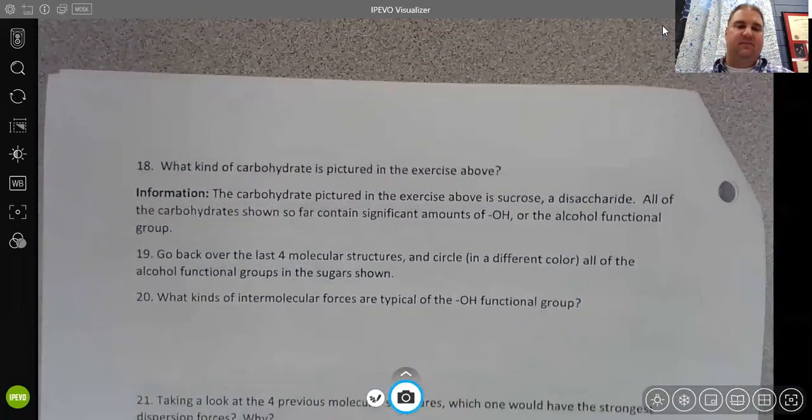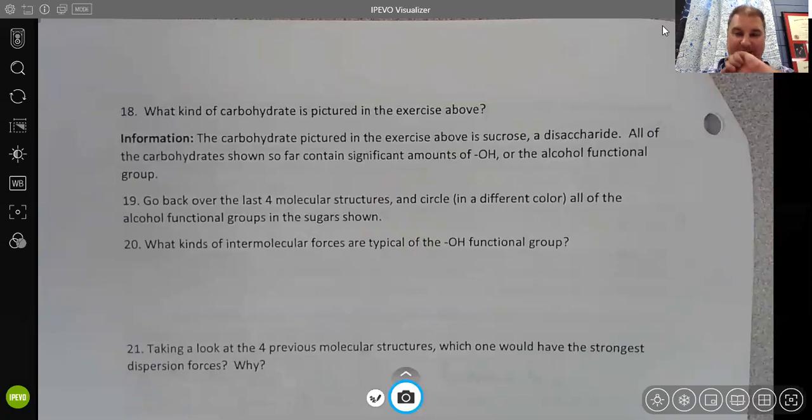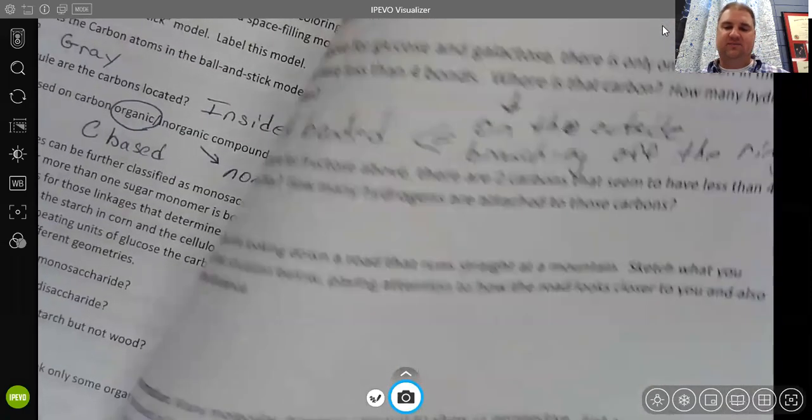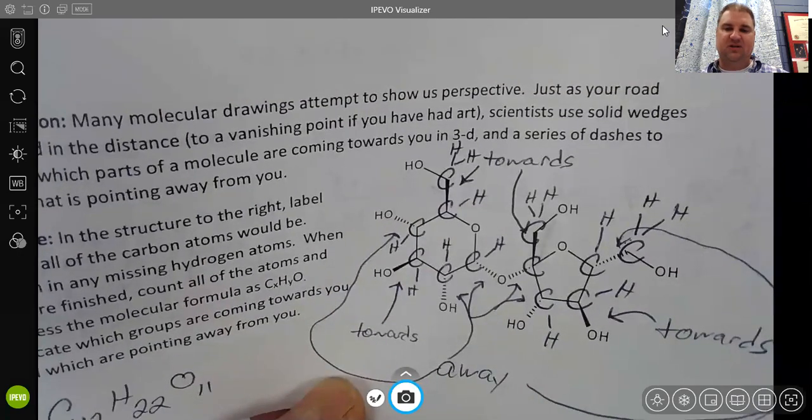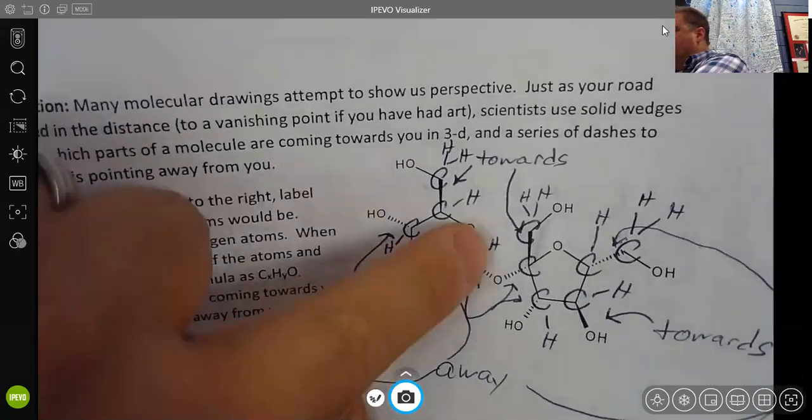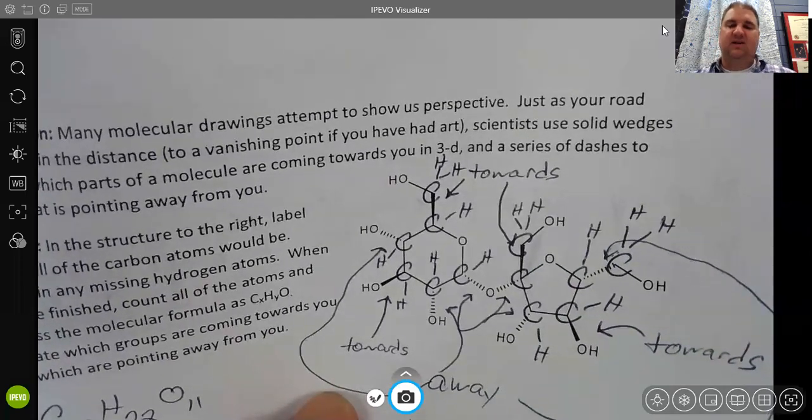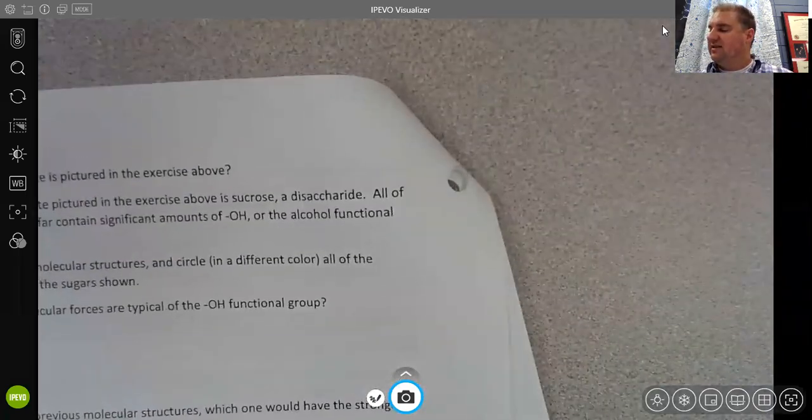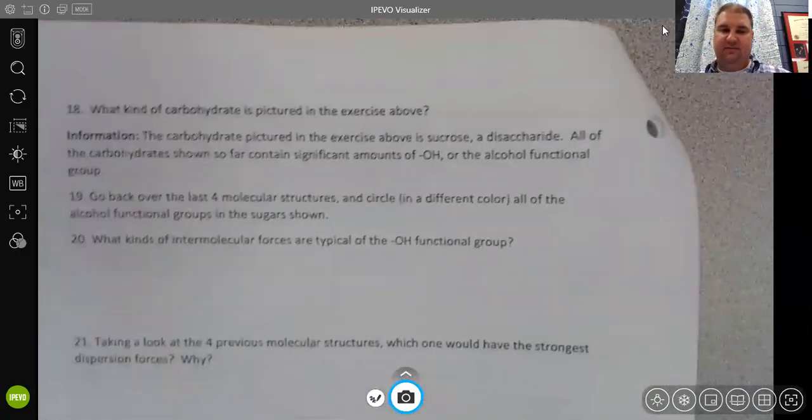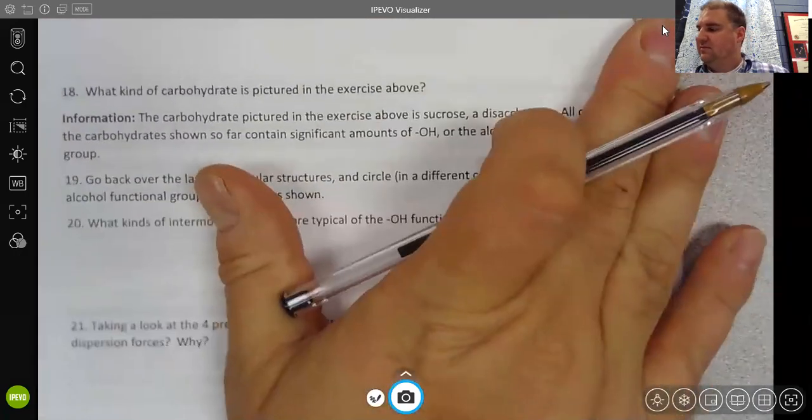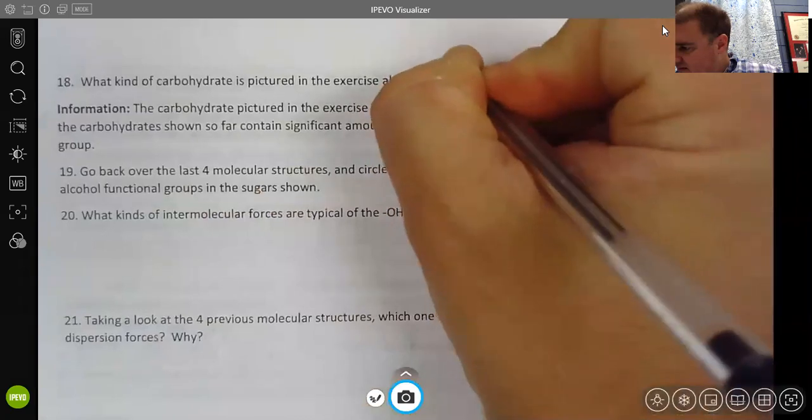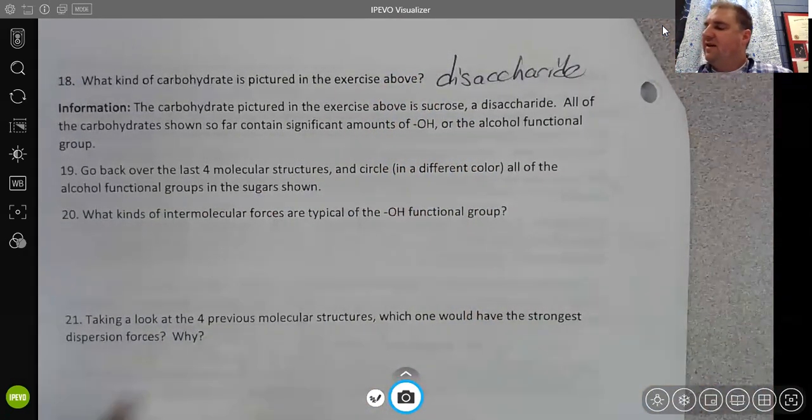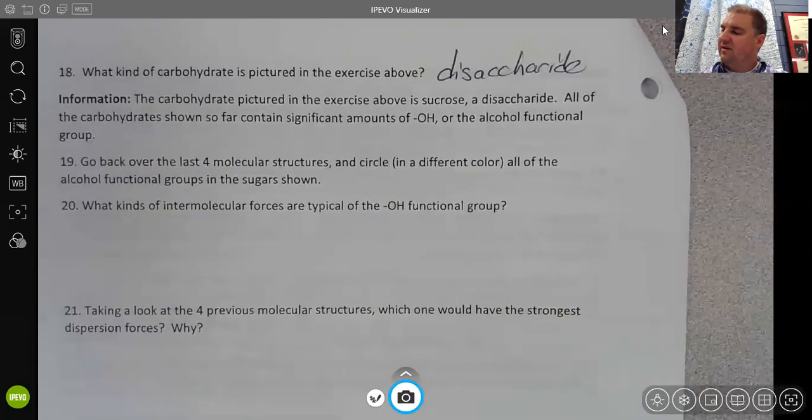And then 18, what kind of carbohydrate? Well, you should notice now that there are two rings in this structure. And that there is a linkage between the two rings. So now this is two sugar molecules put together, which makes this a disaccharide. And then that's confirmed in the following information.